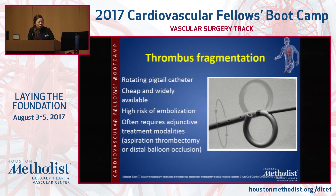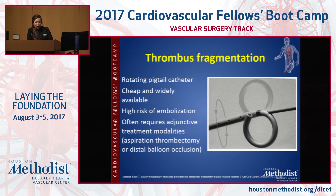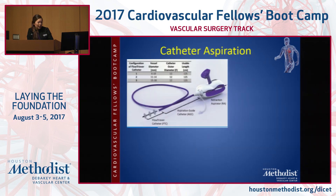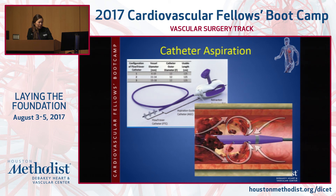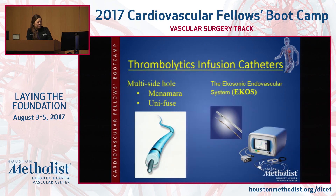Different catheter-directed therapies: traditionally, thrombus fragmentation using a rotating pigtail catheter to break up the clot is the cheapest option. Adjunctive treatment modalities include aspiration thrombectomy, like the FlowTriever device, where you suction the clot out. Methodist is in a trial for the new Inari device that also suctions, but these come with very large sheaths — like 20 French. Then the traditional approach with thrombolytics: multi-side hole catheters — McNamara versus the AngioDynamics Unifuse — and then EKOS.